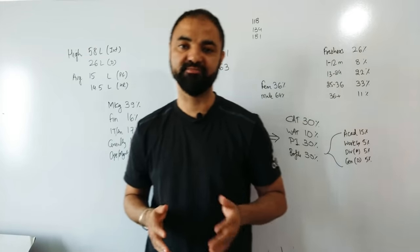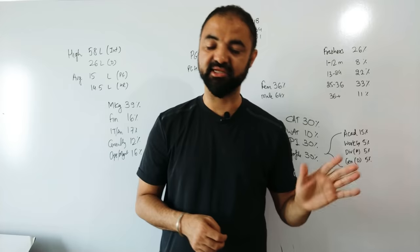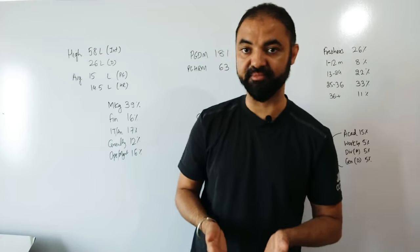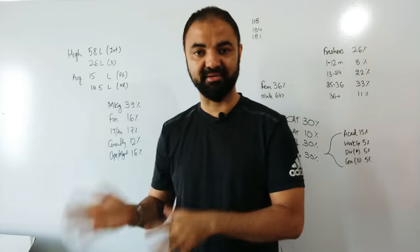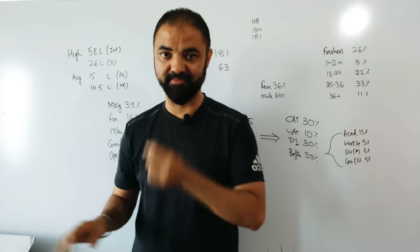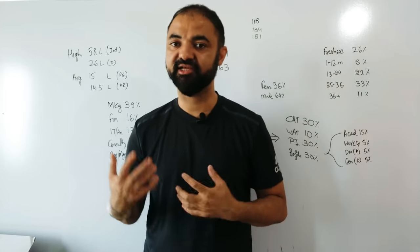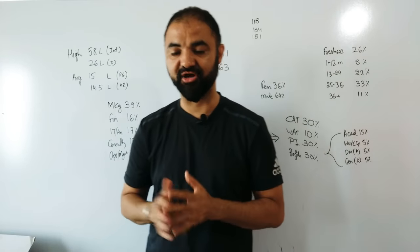Hi guys, there are three kinds of IIMs: major IIMs like IIM A, B, C, Lucknow, Indore; newer IIMs; and new IIMs like IIM Ranchi. These are categorized as Band A, Band B, and Band C. In this video, we'll talk about Band B IIMs and take an example of IIM Ranchi.